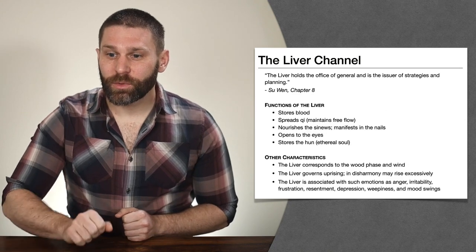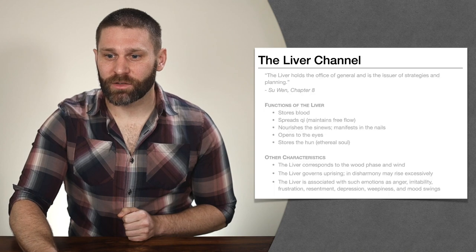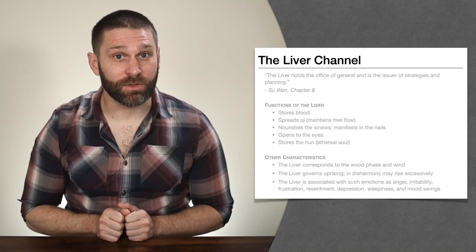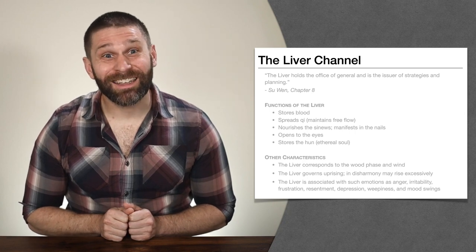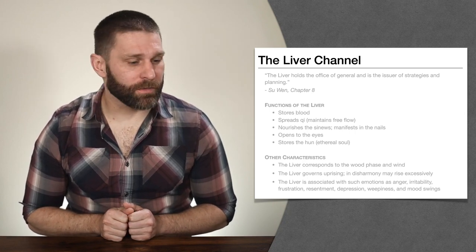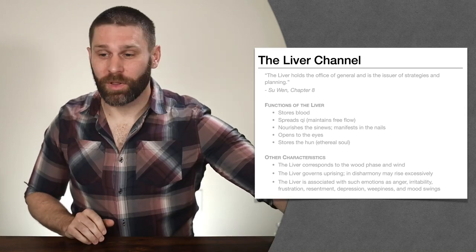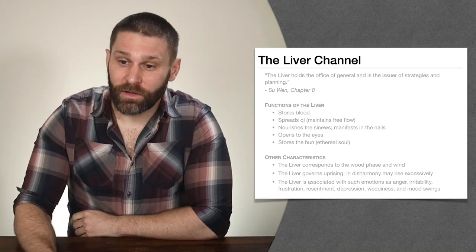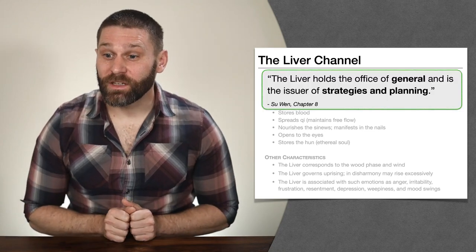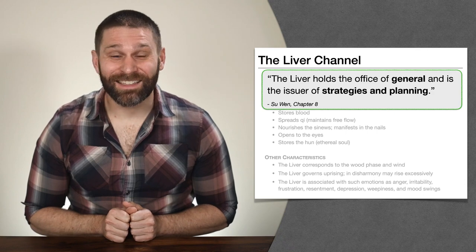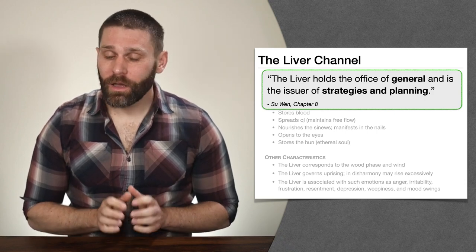When we start with any channel, I always like to start with this quote from Chapter 8 of the Suwen. This is the place where each organ is assigned a government office, and here we're using the translations from Wang Juyi's Applied Channel Theory. For the liver, Chapter 8 of the Suwen says: the liver holds the office of general and is the issuer of strategy and planning.